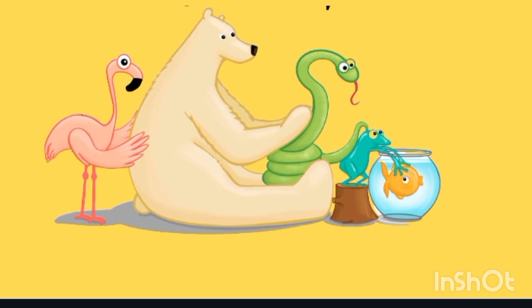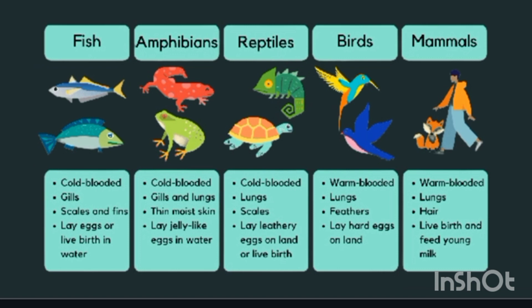On the screen you can see various animals — from right to left: a fish, a frog, a snake, a polar bear, and a flamingo. These animals live in different environments: birds fly, polar bears live on cold land, snakes crawl, frogs live both in water and on land, and fish are always in water. Animals with a backbone are classified into five classes: fishes (aquatic), amphibians, reptiles, birds, and mammals.